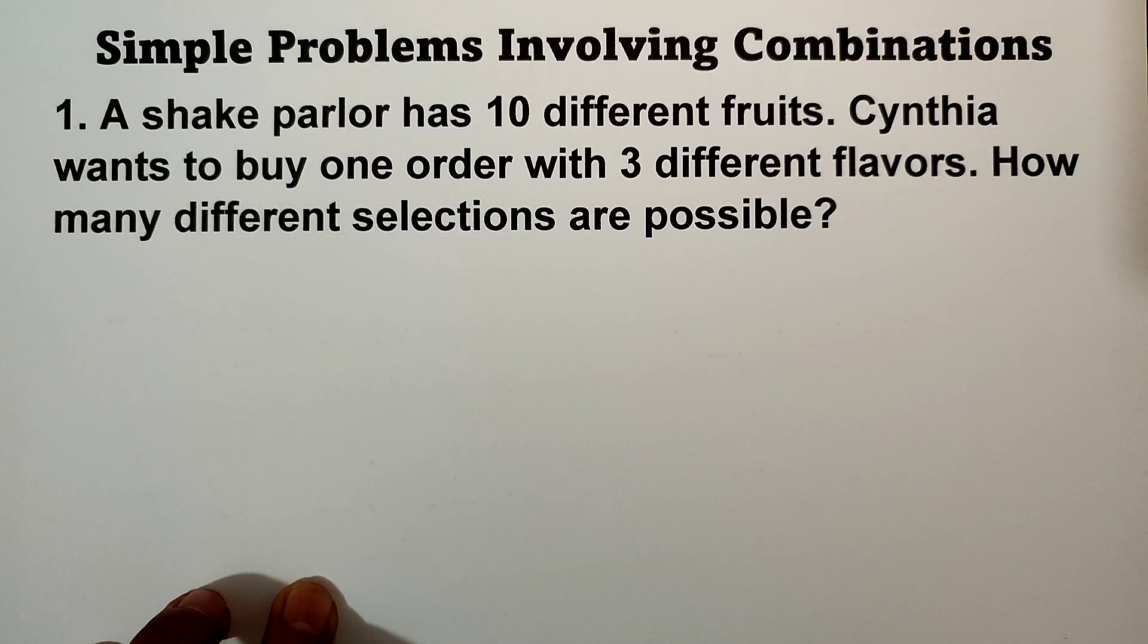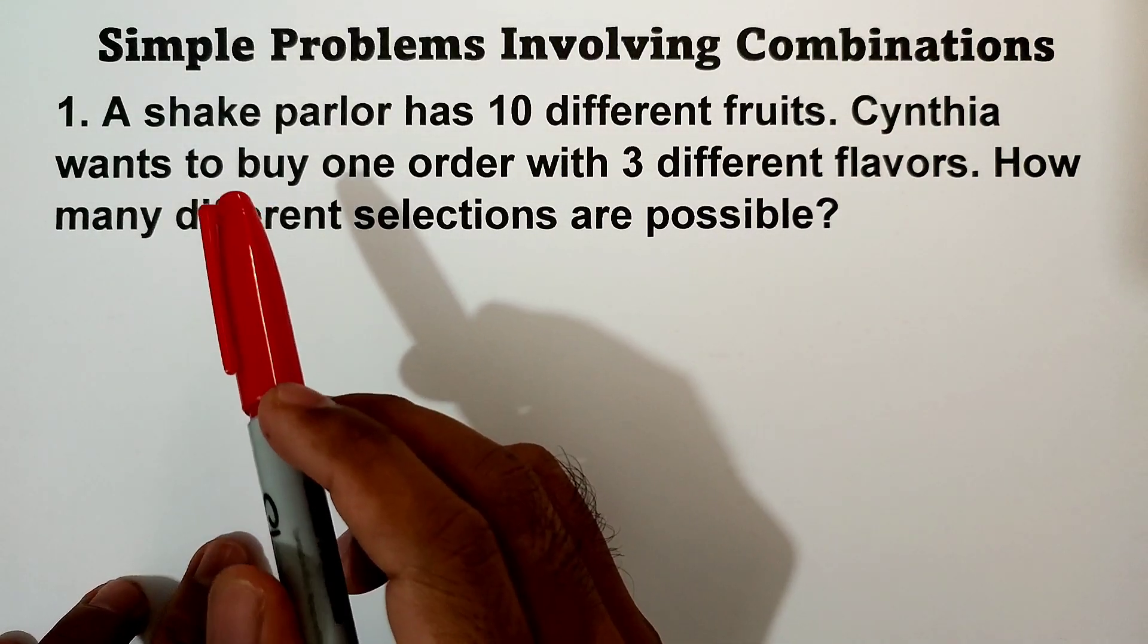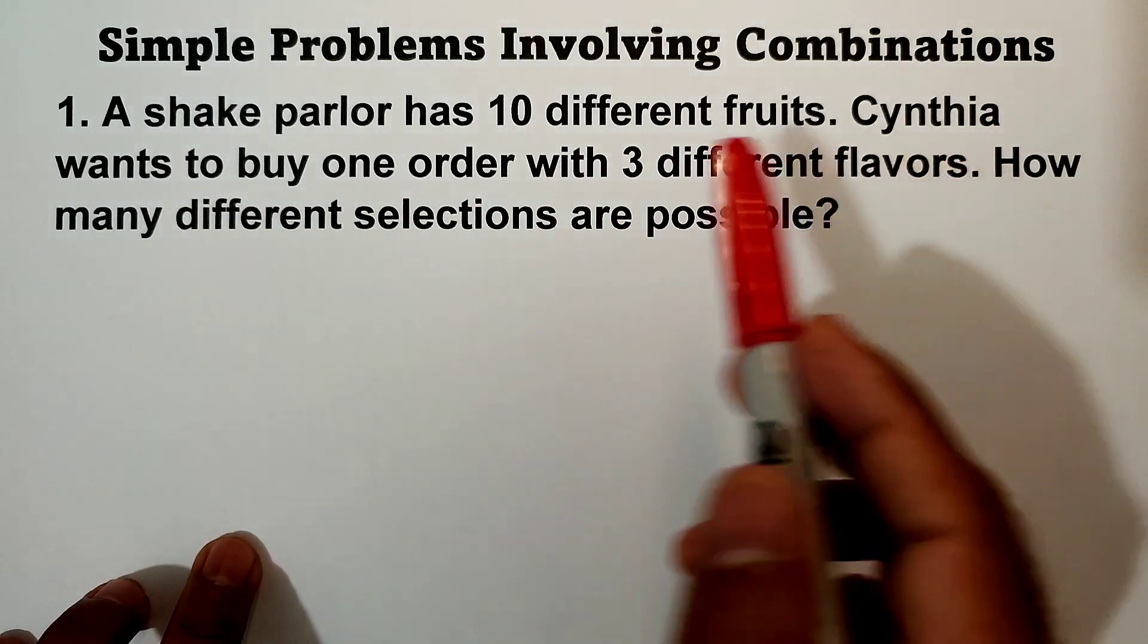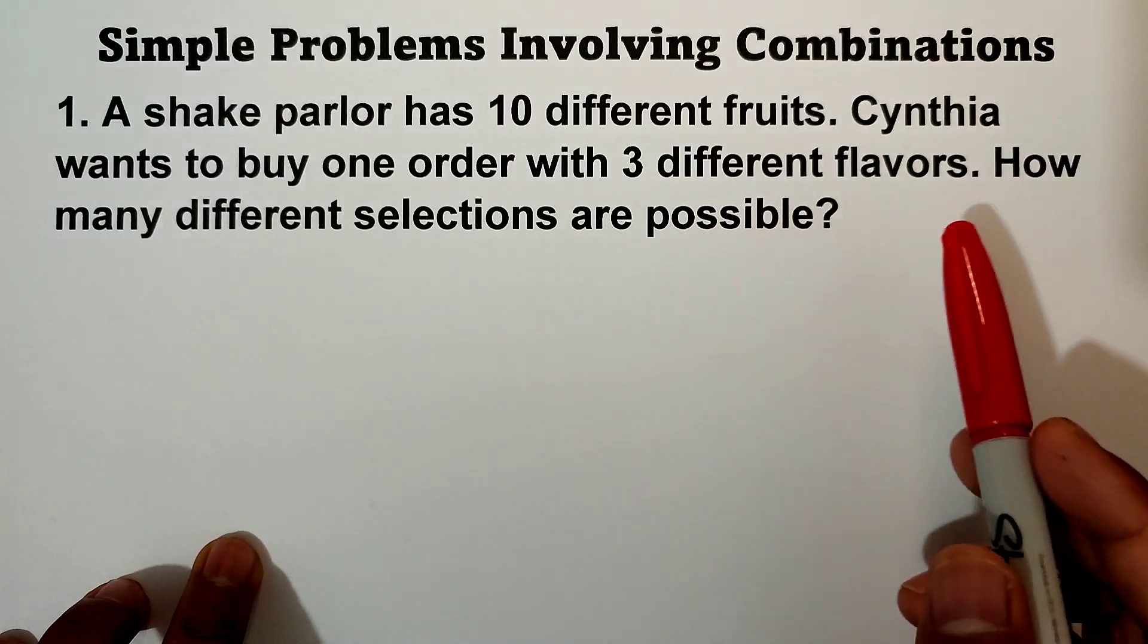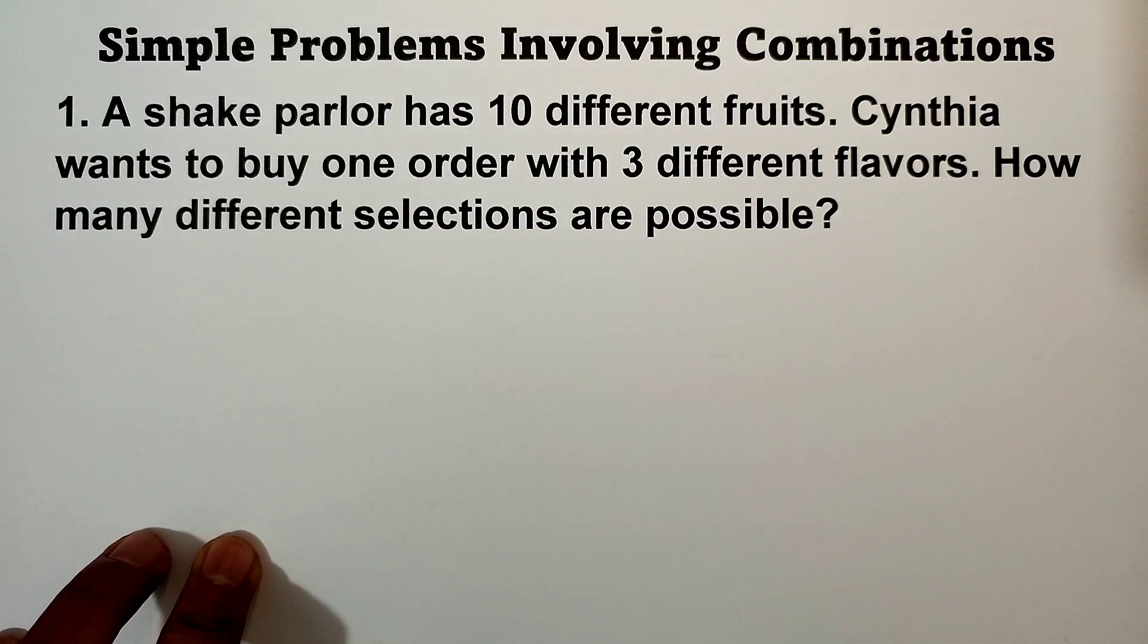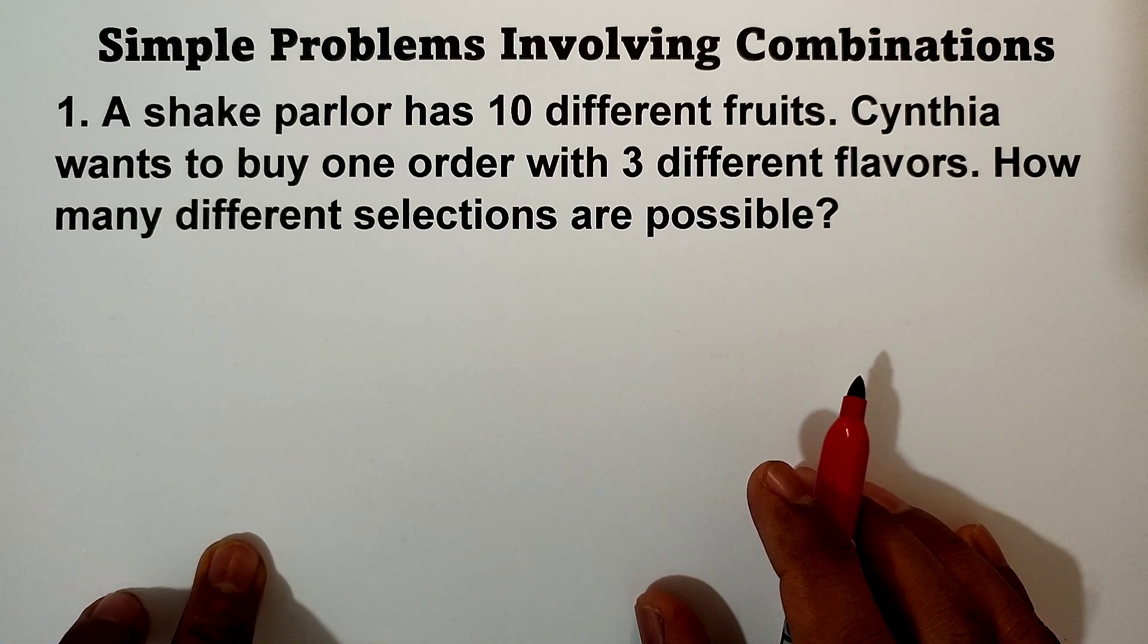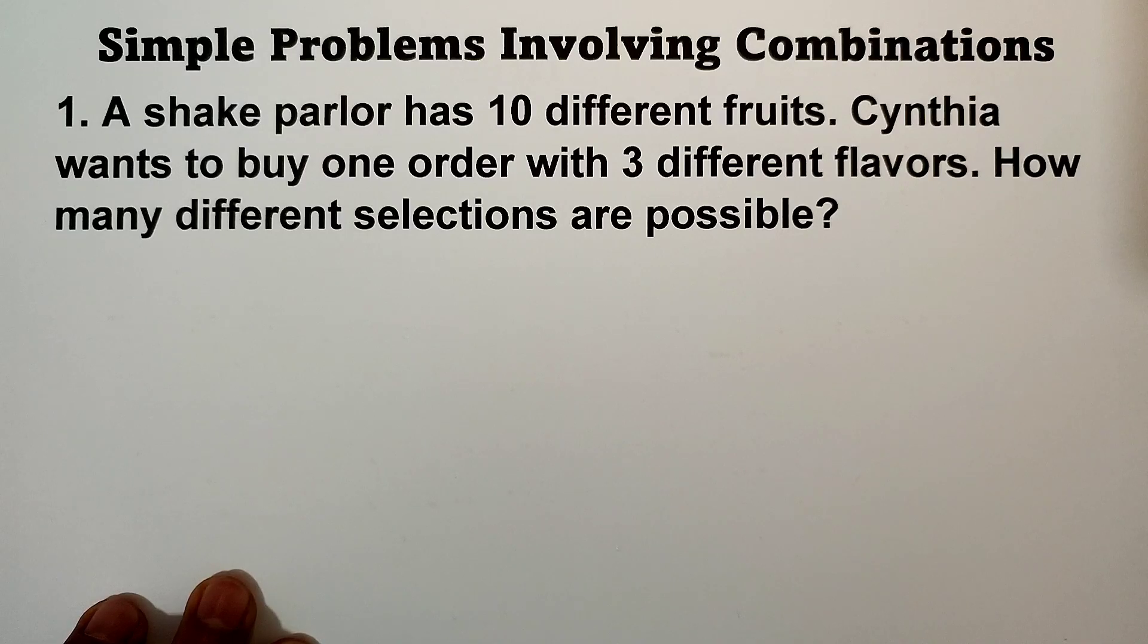Hello everyone, in this video we will solve problems involving combinations. Let's have item number one: A shake parlor has 10 different fruits. Cynthia wants to buy one order with 3 different flavors. How many different selections are possible? The first thing you have to do is identify the number of objects and the number of objects you want to take.